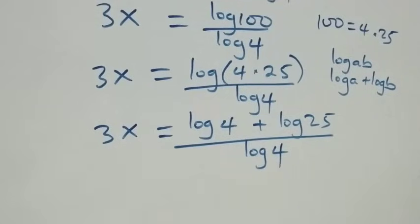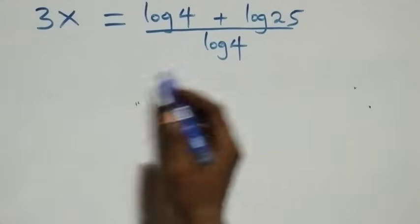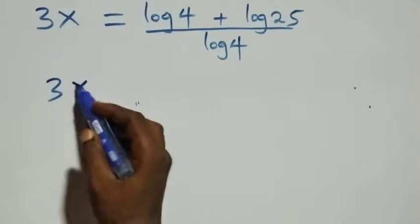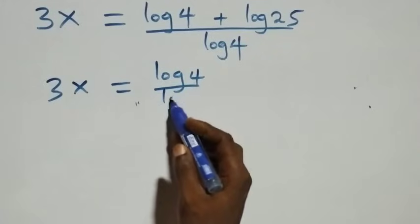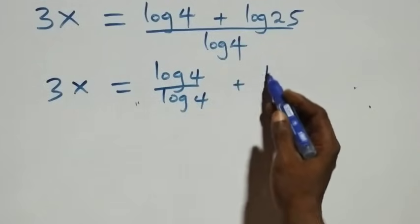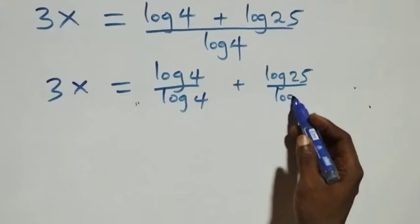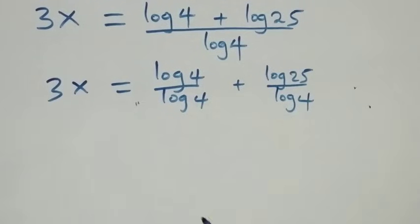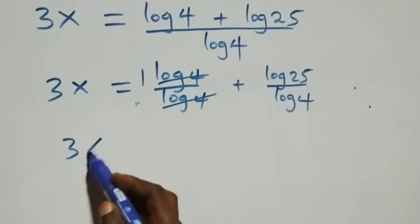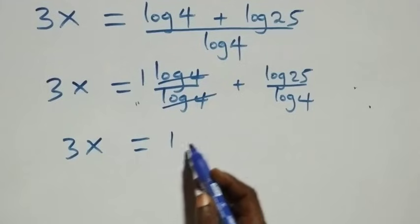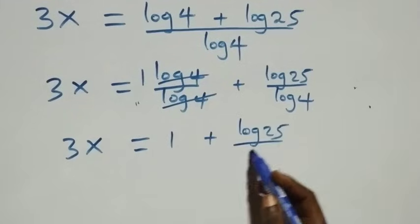We then separate this into two fractions. This becomes 3x equals to log 4 over log 4, plus log 25 over log 4. Since log 4 over log 4 equals 1, we have 3x equals to 1 plus log 25 over log 4.